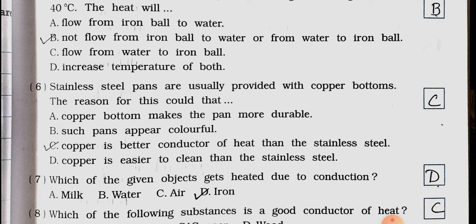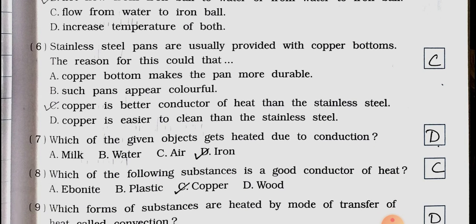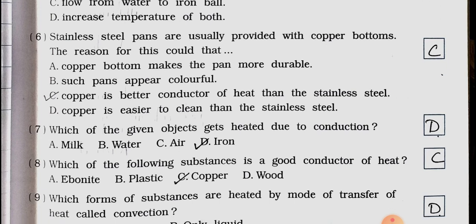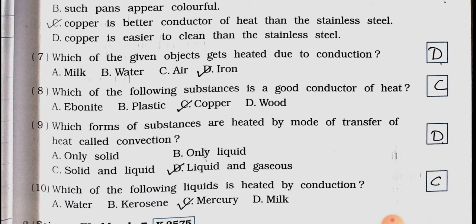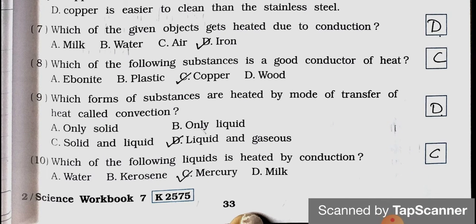Number 6: Stainless steel pans are usually provided with copper bottoms. The reason for this could be: A. copper bottom makes the pan more durable, B. such pans appear colorful, C. copper is better conductor of heat than the stainless steel, and D. copper is easier to clean than the stainless steel. Answer is option C, copper is better conductor of heat than the stainless steel. Number 7: Which of the given objects gets heated due to conduction? A. milk, B. water, C. air, D. iron. Answer is option D, iron.